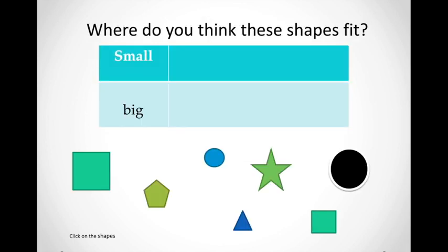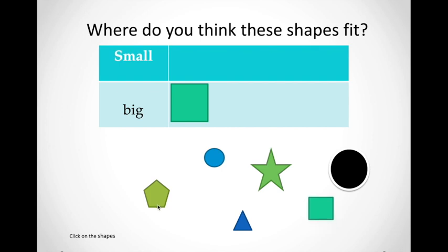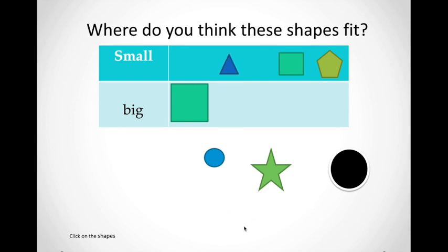Let's do another kind of table. Here we need to sort out all the shapes that are small and all the ones that are big. Let's begin with the square over here. Is it small or big? If you've guessed it is a small one, okay, let's try another shape. Is it a big triangle or is it a small one? It's a small triangle. Excellent.